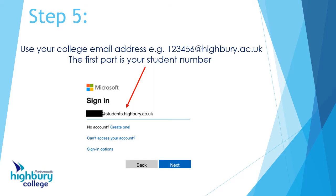Now you need to remember your student number, because in the sign-in part you write your college email address. If you don't know what your college email address is, you put your student number and then '@students.hybrid.ac.uk' — just like it has in the picture, where the black box is. If you don't know your student number, ask your teacher because they can tell you.